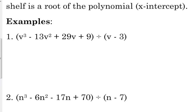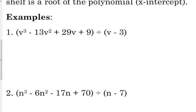So let's look at this first one. v cubed minus 13v squared plus 29v plus 9 divided by v minus 3. So we take our binomial, we set it equal to zero. I do this over up on the side, we set it equal to zero, and we solve for the variable. So v in this case is equal to 3. 3 is going to go on the shelf. The shelf is a backwards L.